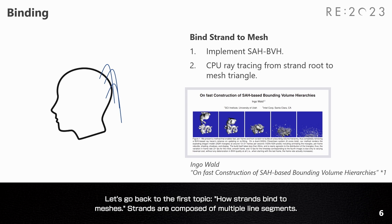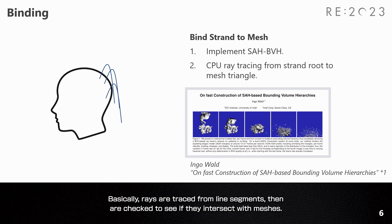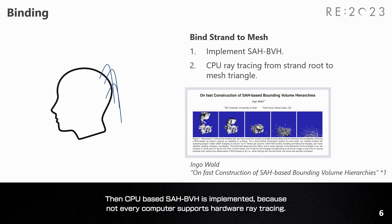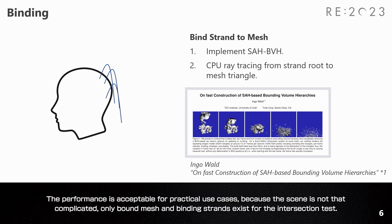Let's go back to the first topic: how strands bind to mesh. Strands are composed of multiple line segments. Basically, rays are traced from line segments and checked to see if they intersect with the mesh. If they intersect, the hit triangle information is recorded. A CPU-based AABB BVH is implemented, because not every computer supports hardware ray tracing. The performance is acceptable for practical use cases, because only bound mesh and binding strands exist for the intersection test.